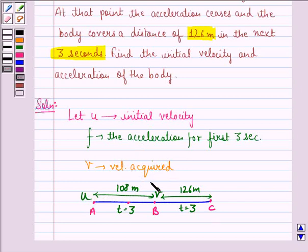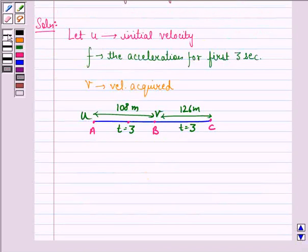We can interpret the question like this: at point A the velocity was u, at point B it became v. This distance is 108 meters. This distance is 126 meters. We see that at the end of these 3 seconds velocity remains uniform since acceleration ceases.